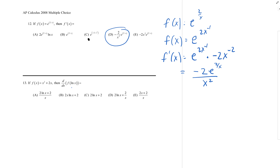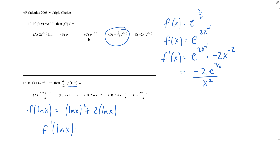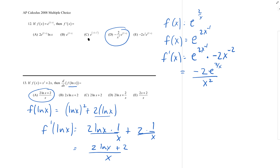Number 13. F of x is that — what's the derivative of f of the natural log of x? Let's do f of the natural log of x first, which is natural log of x squared plus 2 times the natural log of x. Then the derivative: f prime of the natural log of x is the derivative of 2 natural log of x times 1 over x by the chain rule, plus the derivative of the second part which is 2 times 1 over x. Writing it over a common denominator, it's 2 natural log of x plus 2, all over x.